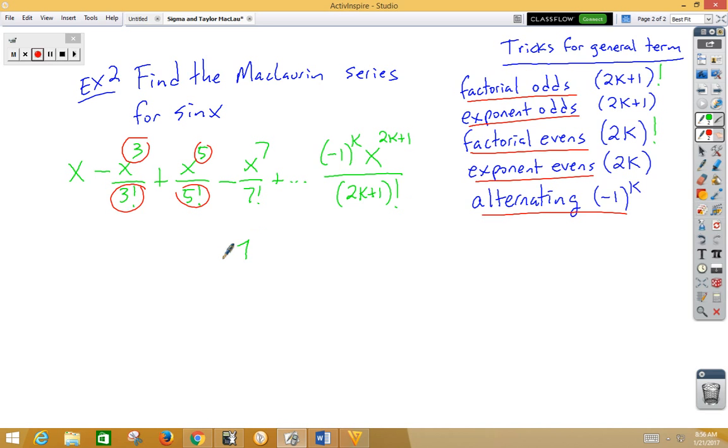So, using sigma notation, sigma starting at 0, going to infinity, negative 1 to the k, x to the 2k plus 1 over 2k plus 1 factorial.